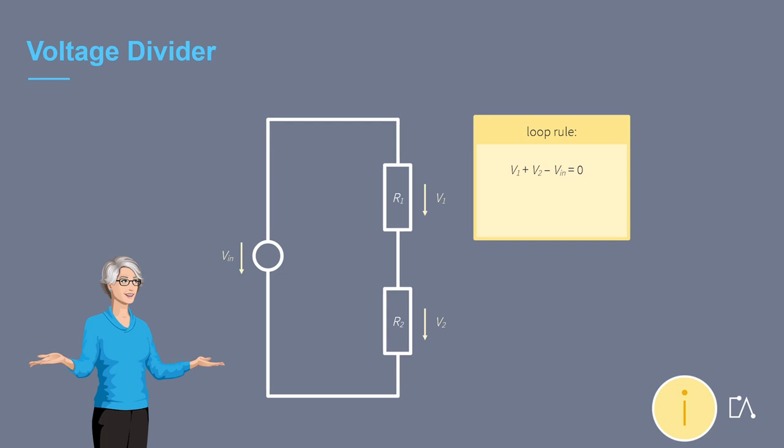This can be rewritten as V in is equal to V1 plus V2. The input voltage is therefore equal to the sum of all partial voltages.